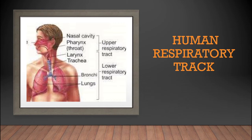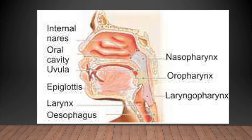Then comes the pharynx, which is known as the throat. It is a cone-shaped passageway leading from the oral and nasal cavity. The pharynx further divides — the oesophagus is part of the digestive system and the larynx is part of the respiratory system. The human pharynx is conventionally divided into three sections: nasopharynx, oropharynx, and laryngopharynx.